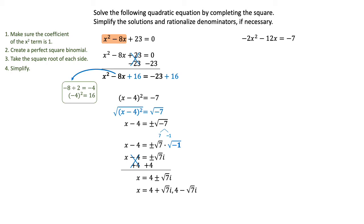In this second example, our first step is going to take a little bit more work because we have a coefficient of negative 2 on the x squared term. So I'm going to write this equation as is and divide everything by negative 2 so that I can get a positive 1 coefficient on the x squared term. As everything cancels, that's going to give me x squared plus 6x on the left, and a positive 7 over 2 on the right.